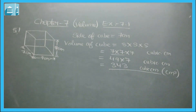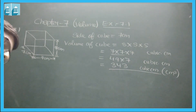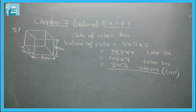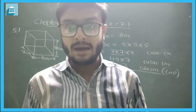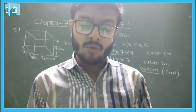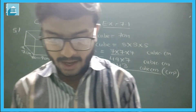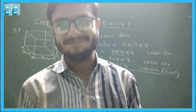Exercise 7.1 was based on only two formulas: volume of cuboid = length × breadth × height, and volume of cube = side × side × side. This video covering the introduction of chapter 7 and Exercise 7.1 is now complete. In the next video, we will start Exercise 7.2. Thank you so much, my dear students!